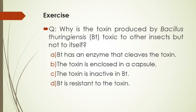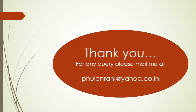Students, here is a question for you: why is the toxin produced by Bacillus thuringiensis toxic to other insects but not to itself? There are four options: number one, BT has an enzyme that clears the toxin; number two, the toxin is enclosed in a capsule; number three, the toxin is inactive in BT; or number four, BT is resistant to the toxin. Please choose the correct option and send it in the comment box. Today we have learned about biotechnology and its role in agriculture, especially to prepare pest-resistant plants. If you have any query, please mail me.